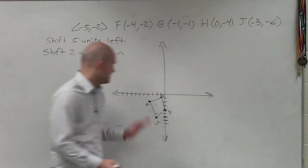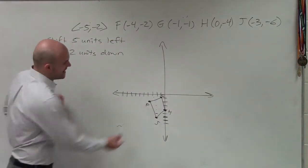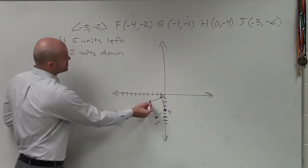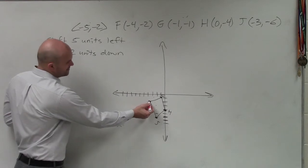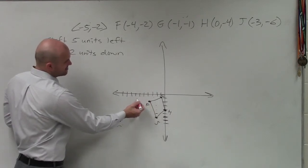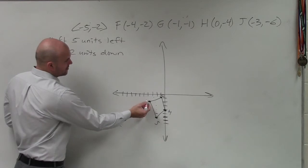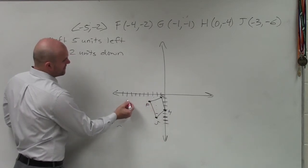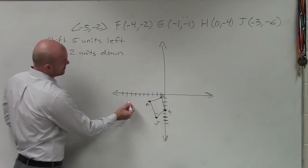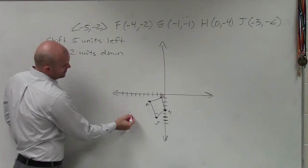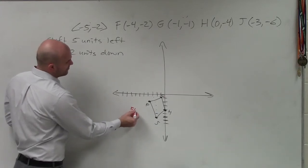So if I look at F, F right now is at negative 4. So therefore I'm going to shift it five units to the left: negative 4, 5, 6, 7, 8, and then two units down: 1, 2. So now that's F prime.